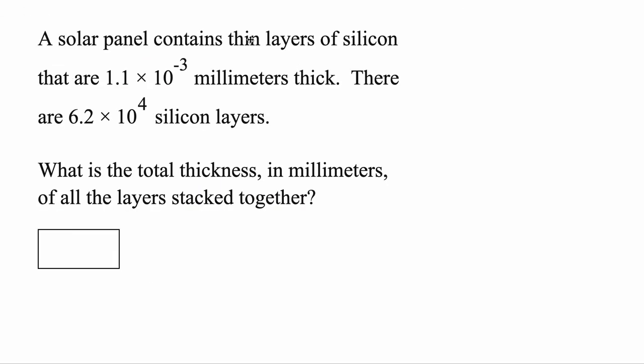For this one, a solar panel contains thin layers of silicon. And they're 1.1 times 10 to the negative 3 millimeters thick. Well, that's hard to visualize, but we'll come back to that. They're 6.2 times 10 to the 4 silicon layers. We want to know what is the total thickness in millimeters of all the layers stacked together. If it's hard to visualize what is the total thickness here, let's start off by drawing a solar panel. We'll just make a rectangle. Now we're given this first number. And that's how many millimeters thick one layer of silicon is. Let's just go ahead and draw a purple line to represent that. Once again, this line represents how thick one layer of silicon is. But, we can make up a number because this is hard to visualize. Let's pretend that this thing here is 2 inches thick. Just make it a nice easy number to deal with. Okay, next, there are this many layers of silicon.